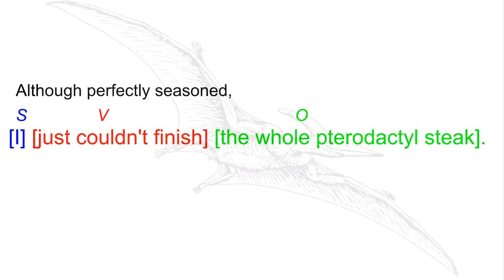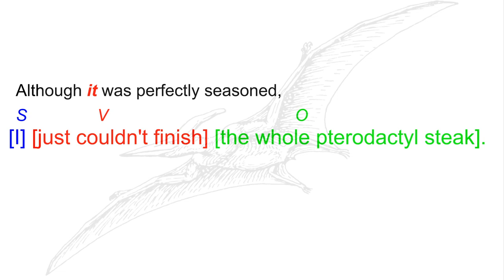But do you see the problem here? The phrase "although perfectly seasoned" comes right before the subject, I, which makes it seem like I might be the one who's perfectly seasoned. This phrase, "although perfectly seasoned," is a dangling modifier because it's grammatically unclear what the phrase describes. I could fix this ambiguity by adding a preposition. It can't refer to me because I'm a person, for reals.